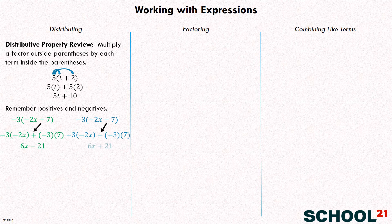That first term is going to be six X, and that second term is going to be positive 21. You can see that these problems are slightly different because we had a different addition or subtraction symbol inside the parentheses.